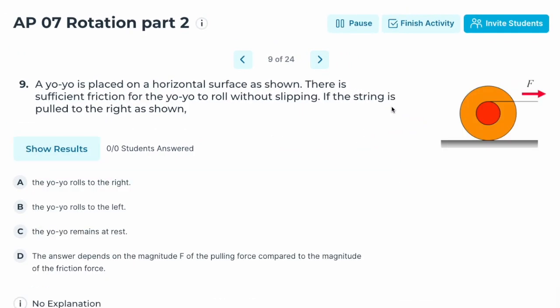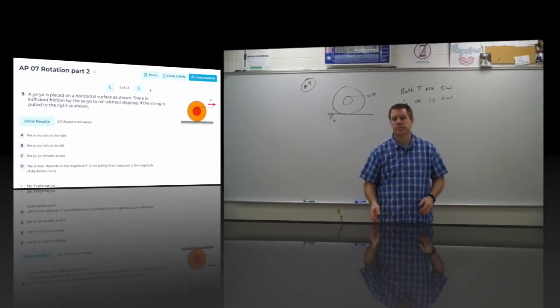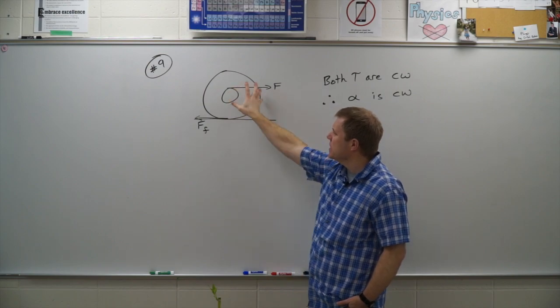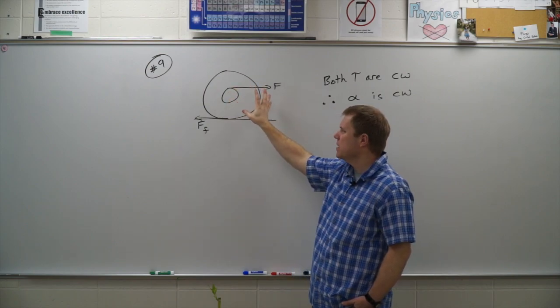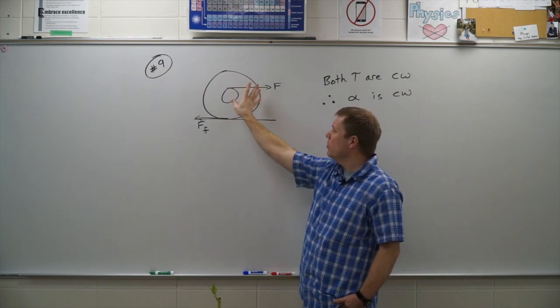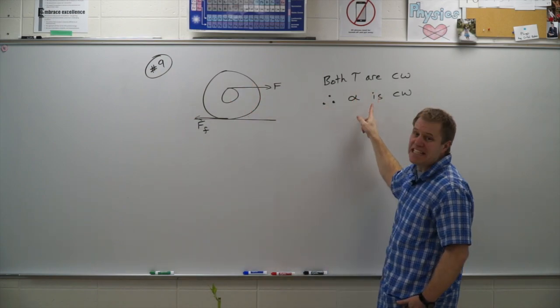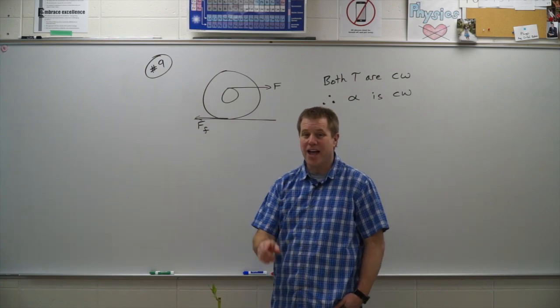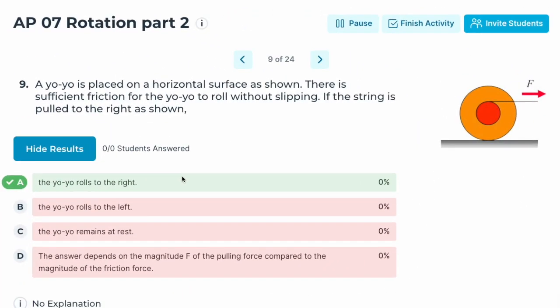Number nine: a yo-yo is placed on a horizontal surface with sufficient friction to roll without slipping. If the string is pulled to the right, what does the yo-yo do? Both the pulling force and the force of friction produce clockwise torques on the yo-yo. Since both torques act in the same direction, the angular acceleration is clockwise as well. Correct answer: A.